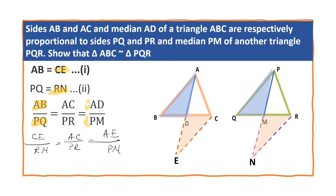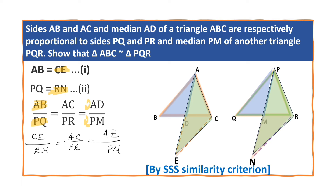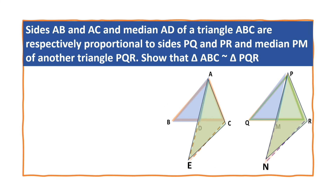This relationship involves triangles ACE and PRN. By the SSS similarity criterion — side, side, side — we can say that triangle ACE is similar to triangle PRN. Since triangle ACE is similar to triangle PRN, we can say that angle CAE is equal to angle RPN.